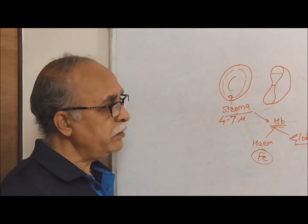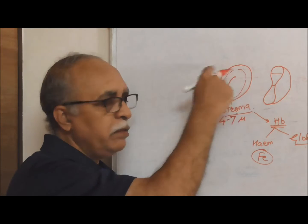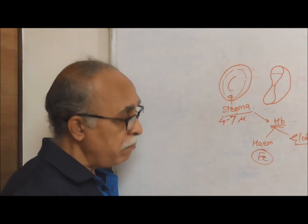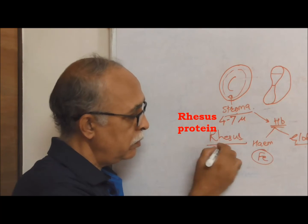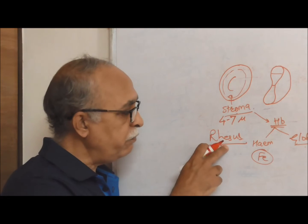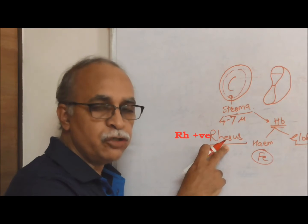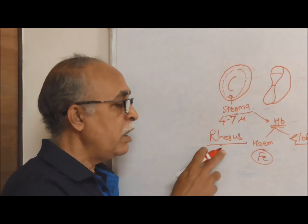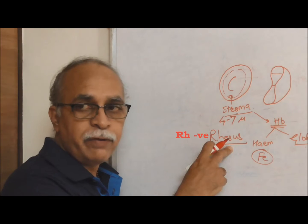Another important factor is the plasma membrane — the cell membrane of the red blood cell may have a Rhesus protein on it. If the Rhesus protein is present, you call that Rh-positive blood. If this Rhesus protein is absent, you call that Rh-negative blood. This is a blood grouping system.